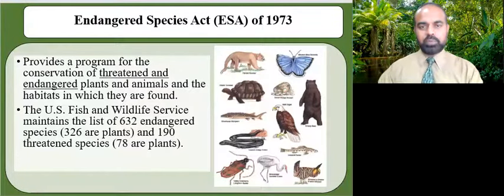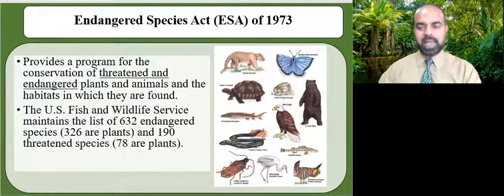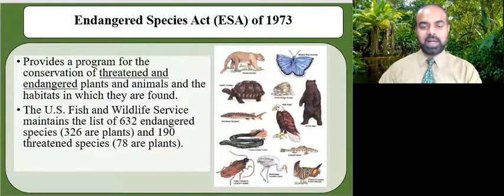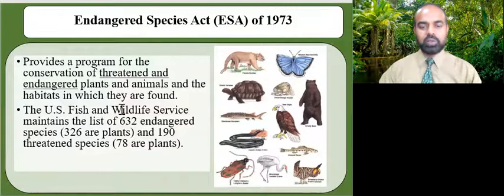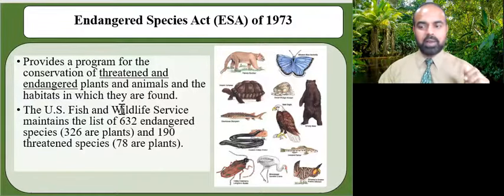The next law we'll discuss is the Endangered Species Act, also known as ESA. The ESA provides a program for the conservation of threatened and endangered plants and animals and the habitats in which they're found. Endangered species are those at risk of extinction, while threatened species are those at risk of becoming endangered in the future. The lead federal agencies for implementing ESA are the U.S. Fish and Wildlife Service, FWS, and the U.S. National Oceanic and Atmospheric Administration, NOAA Fisheries Services.